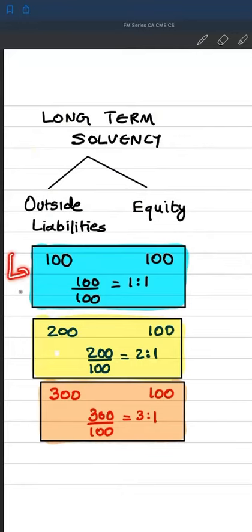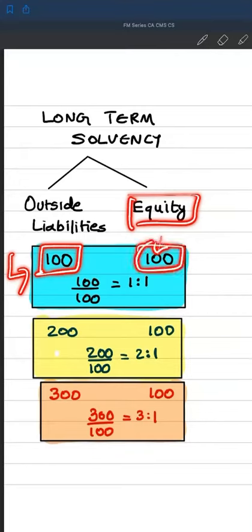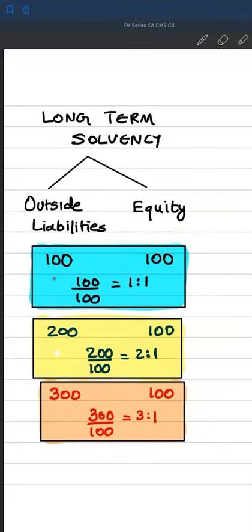Look at these three scenarios. Scenario one: where outside liabilities is 100 and equity is also 100. So the formula is liabilities by equity, that is 100 divided by 100. You get the ratio as 1 is to 1. It means for 1 rupee of equity there is 1 rupee of debt, meaning 50% debt, 50% equity.